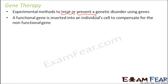In simple words, a functional gene is inserted into an individual's cell to compensate for the non-functional gene. If somebody is suffering from a genetic disorder, there is a non-functional or absent gene. So we take a normal gene, extract it from somewhere else, and insert it into that individual so that the inserted gene can take up the role of the non-functional gene.